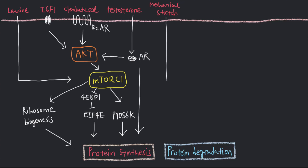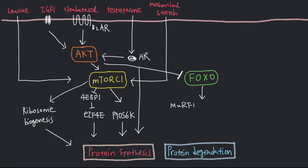Mechanical stretch can also activate mTOR complex 1, therefore increasing protein synthesis. Regarding protein degradation, FOXO transcription factors are very important mediators of muscle atrophy. Normally, AKT inhibits FOXO through direct phosphorylation, but when AKT activity is reduced, FOXO activity increases. These FOXO transcription factors stimulate the expressions of muscle ring finger 1 (MRF1) and ATROGEN1 proteins involved in the ubiquitin-proteasome pathway, and LC3 and BNIP3 involved in the autophagy-lysosome pathways.